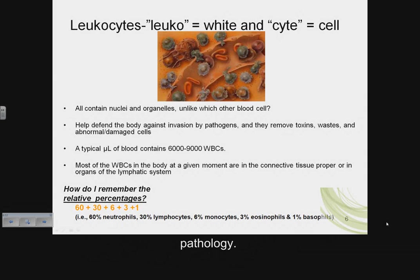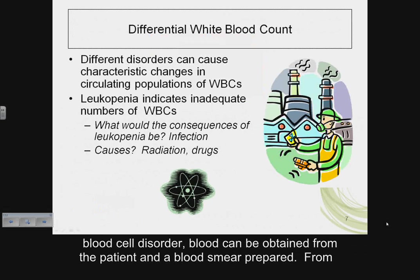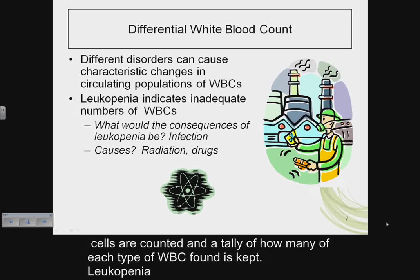When a person is suspected of having a white blood cell disorder, blood can be obtained from the patient and a blood smear prepared. From this, a differential white blood cell count can be done — basically all the white blood cells are counted and a tally of how many of each type is kept.